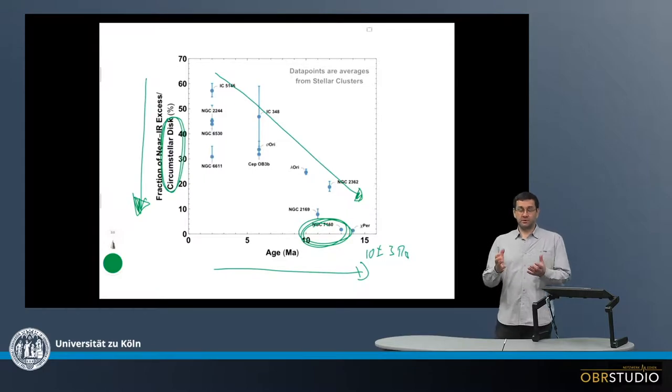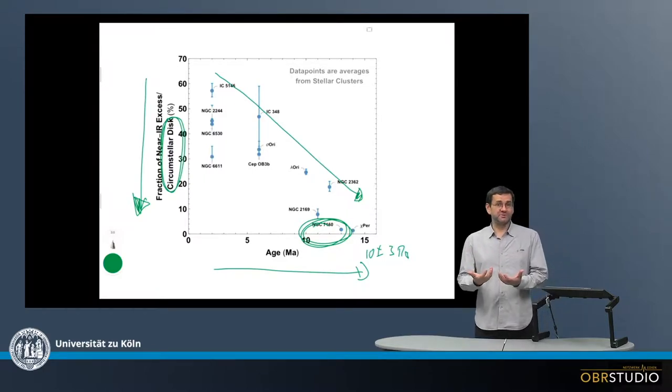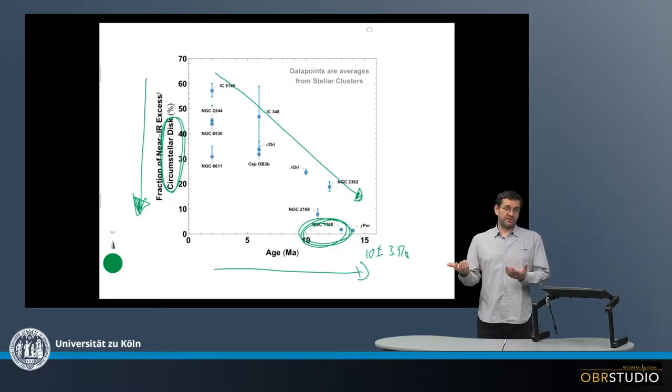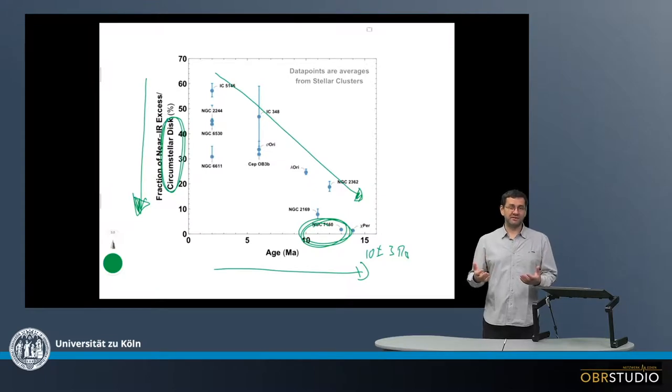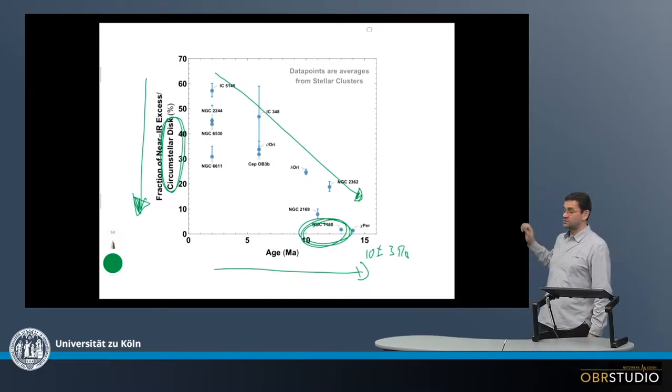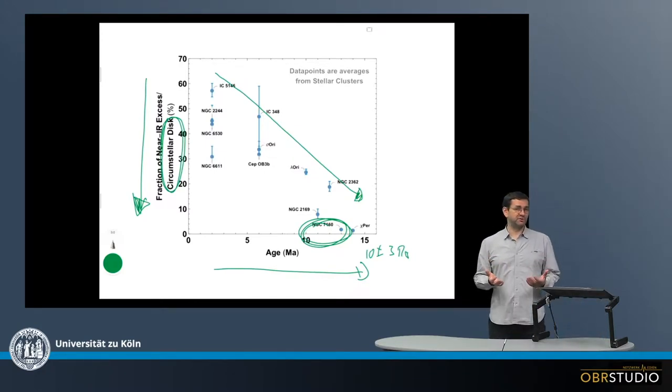This means that chondrules, which are thought to have formed in the protoplanetary disk, don't form after about 5 million years, which means that our protoplanetary disk of our solar system probably also had a lifetime of 5 to something millions of years. And this is in very nice accordance to what is observed here from these other protoplanetary disks.